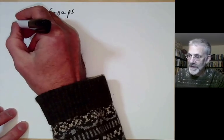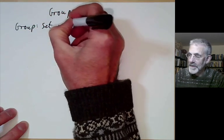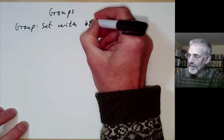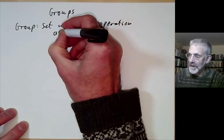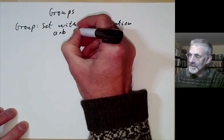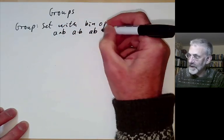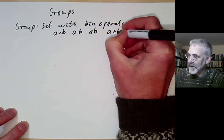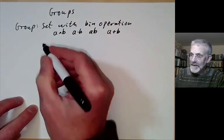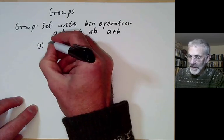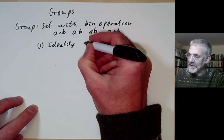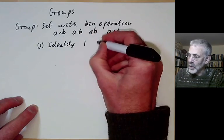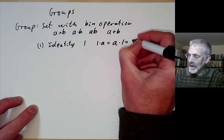Let's recall what a group is. A group is a set with some sort of binary operation, usually denoted by multiplication. We could write a times b, or sometimes a dot b, or just ab if we're feeling lazy, or even a plus b. This has to have the following properties. First of all, there's an identity element — an element such that 1 times a equals a times 1 equals a.